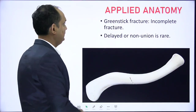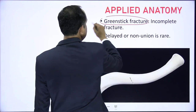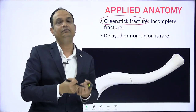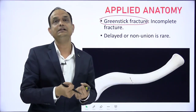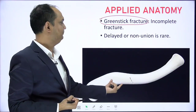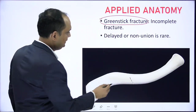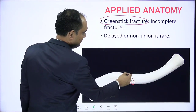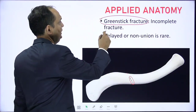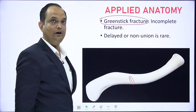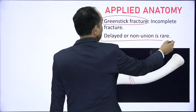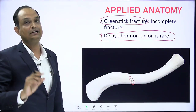Greenstick fracture is also important: if you take a green branch of a tree and try to break it, you cannot break it completely because it is green. If you have a dry stick you completely break it. When we have incomplete fractures of the bone we use the word 'greenstick.' The fracture is there but the fragments are not completely divided into two parts — these partial fractures are known as greenstick fractures. Delayed or non-union of the clavicle is very rare; generally the clavicle heals well.